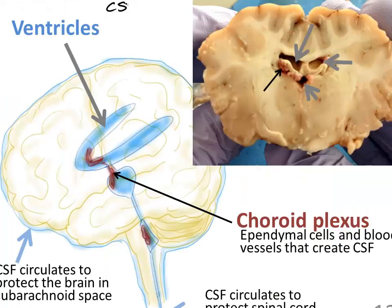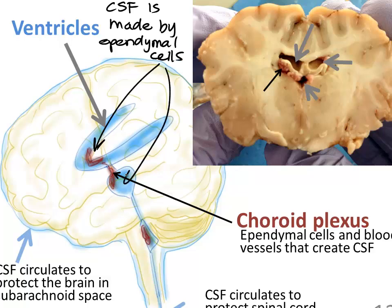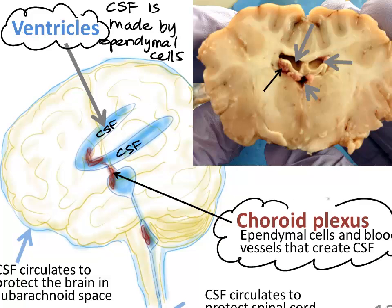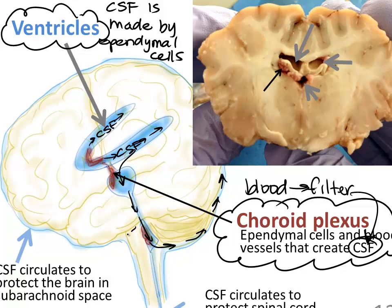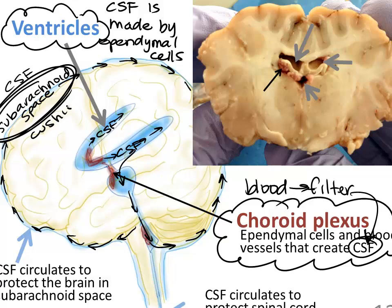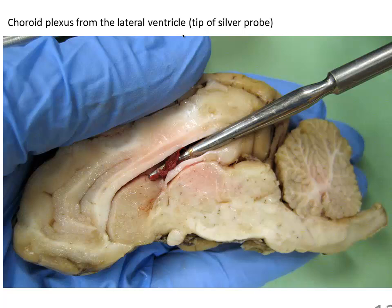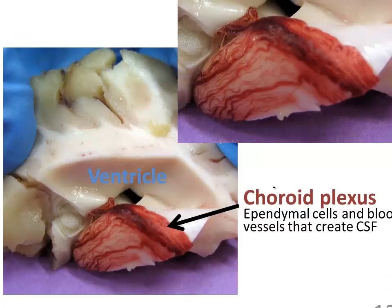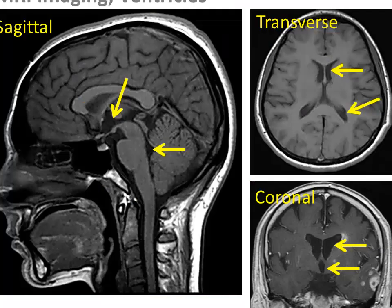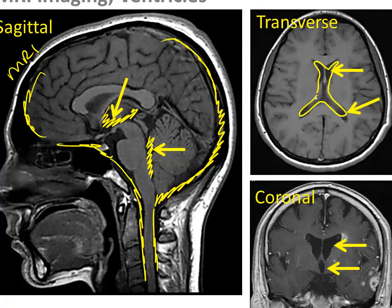The meninges are the protective tissue layers around the brain. The ventricles are fluid-filled spaces inside the brain. Structures called choroid plexuses contain ependymal cells that make CSF. The CSF then drains into the subarachnoid space between the arachnoid and pia mater, cushioning the brain. That same CSF travels around the spinal cord as well, so the CSF of the brain and spinal cord mix. The choroid plexus essentially filters blood into CSF. Ventricles can be seen as small CSF-filled pockets on an MRI.